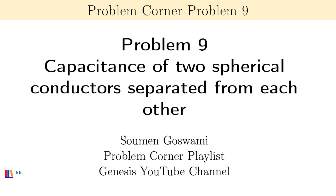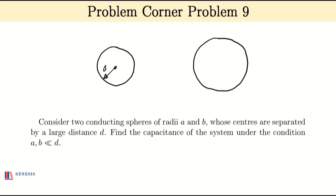Today's problem goes like this. Consider two conducting spheres of radii A and B whose centers are separated by a large distance D. Find the capacitance of the system under the condition both A and B are very small compared to D.